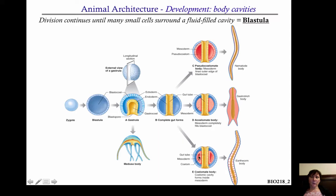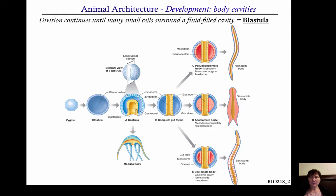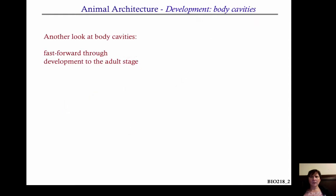The third form is when you have the mesoderm that completely surrounds the body cavity — that's a true coelom. These are referred to as coelomates, and they're showing you an example of an earthworm here. So you can be acoelomate, pseudocoelomate, or coelomate.